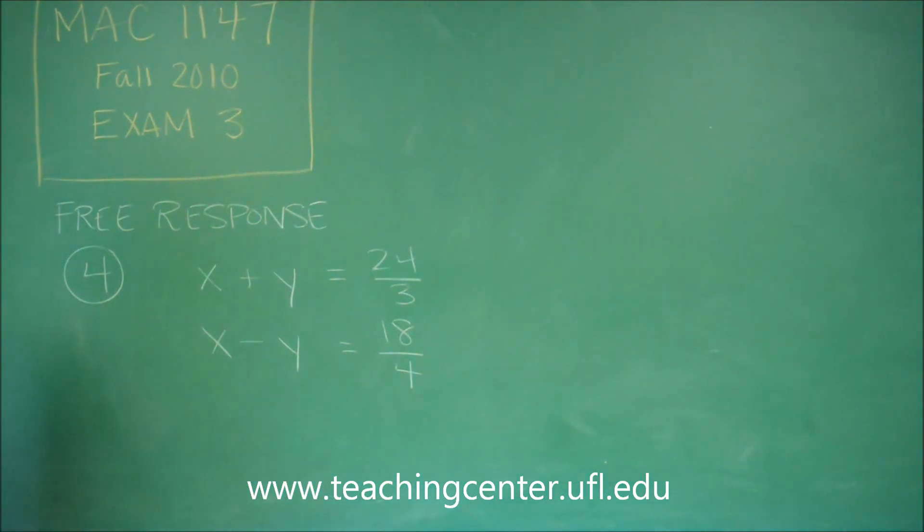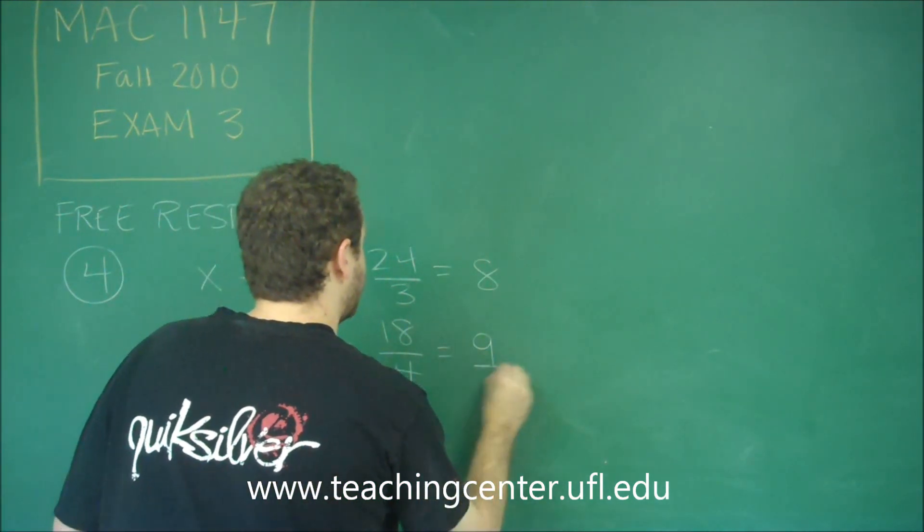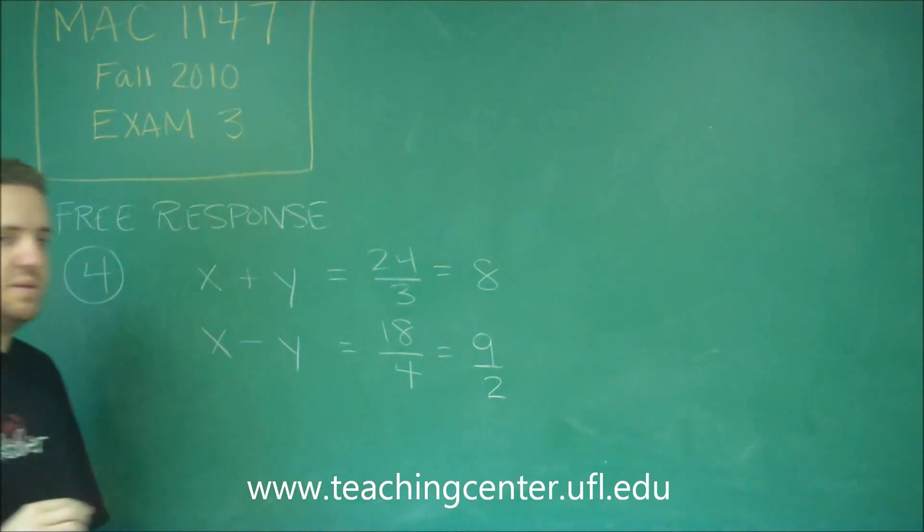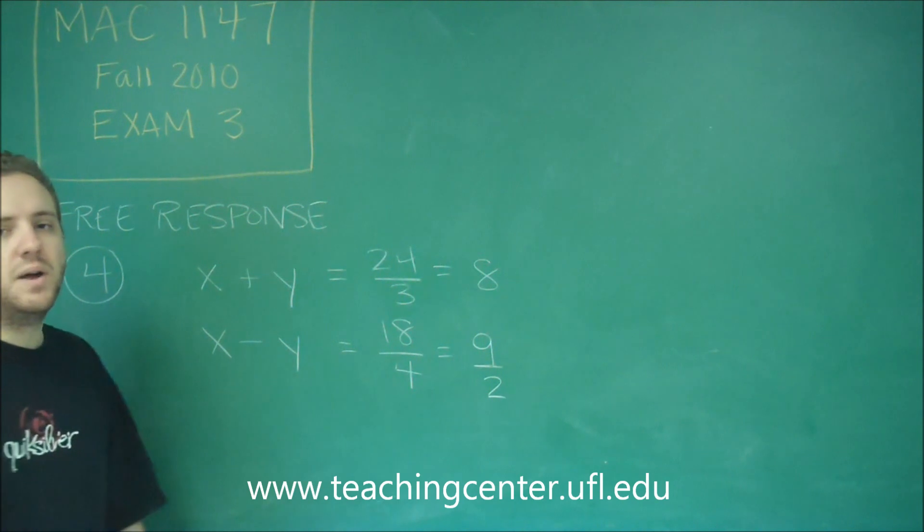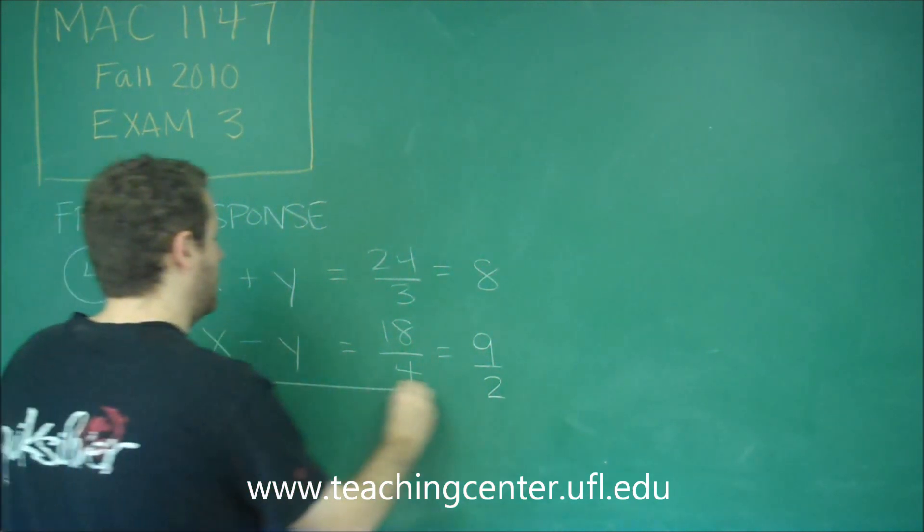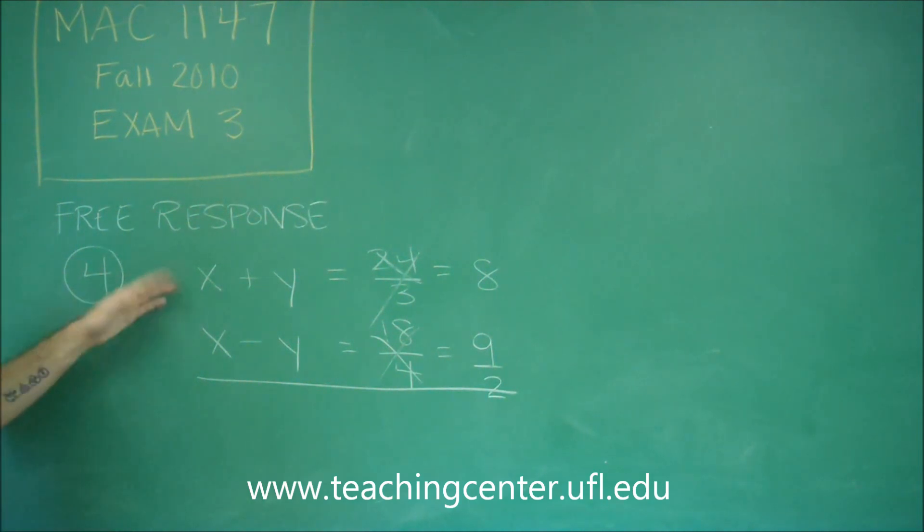And now we just have a system of equations. So this is 8. This is 9 over 2. We can't simplify it any more than that. So we have two equations, two variables. And you can see, with the plus and minus y, it's already set up to do combination.